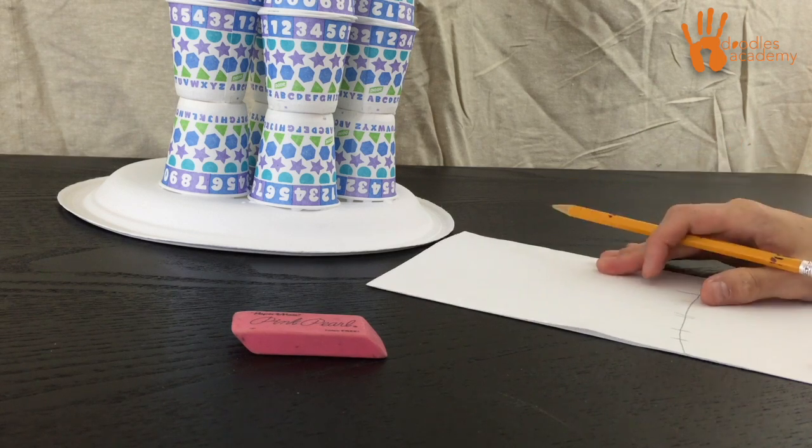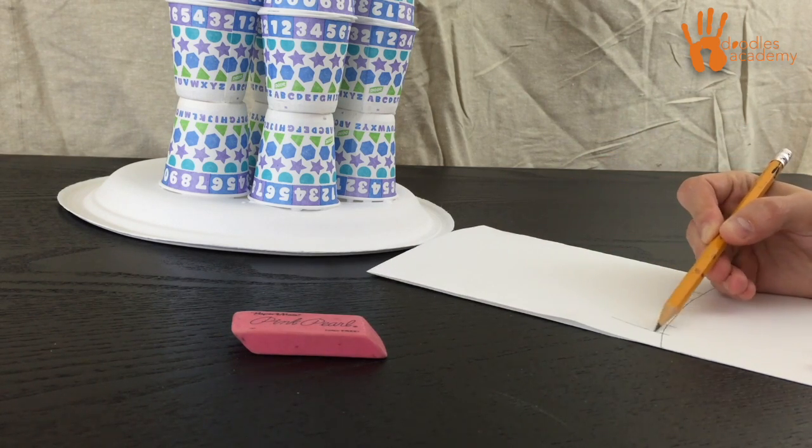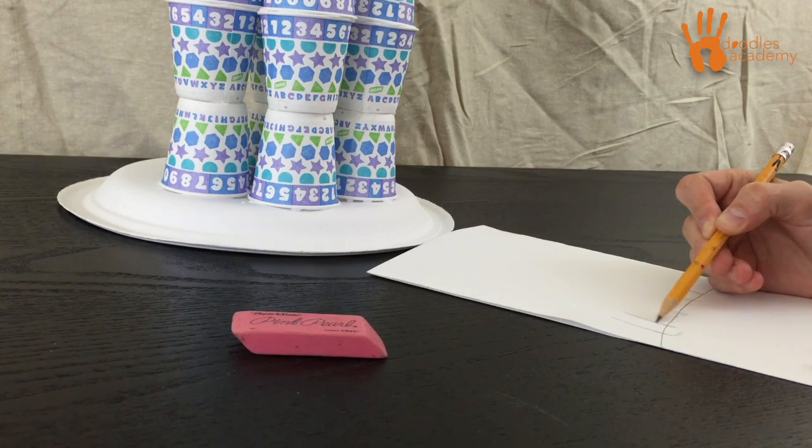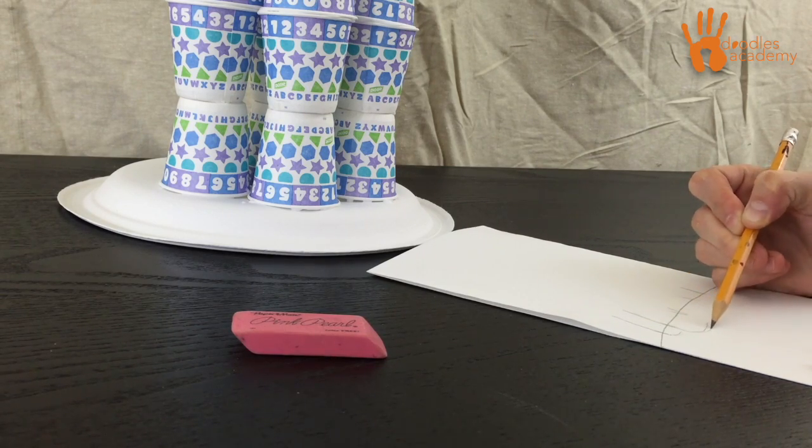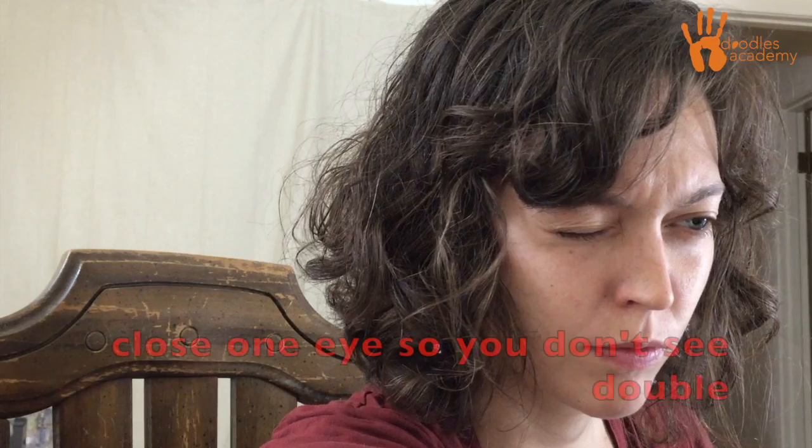You want to notice the small details that make your object, in this case your house, unique. You can use your pencil to compare parts of your drawing and make it more realistic.